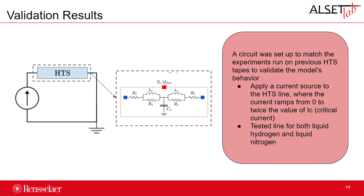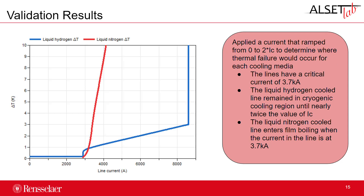Now that we have all the thermal and electrical models for the HTS cable, we simulate them. We set up a circuit matching experiments run on previous HTS tapes to validate the model's behavior. We applied a current source at the HTS line, ramping the current from zero to twice the value of IC — the critical current — and grounded the line on the other end. We tested this for liquid hydrogen, liquid nitrogen, and hydrogen gas cooling.